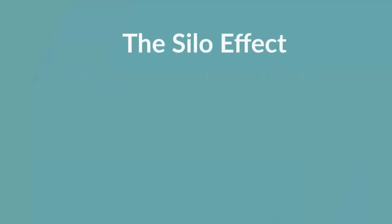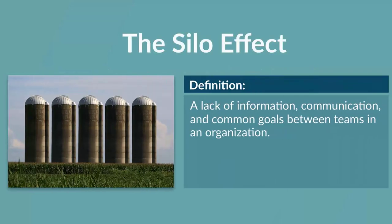A silo on a farm prevents different grains from mixing. This can be compared to each team within an organization existing within individual silos. A lack of information, communication, and common goals between teams is referred to as the silo effect. Siloed employees show a reluctance to integrate their efforts with employees in other functions of the organization.